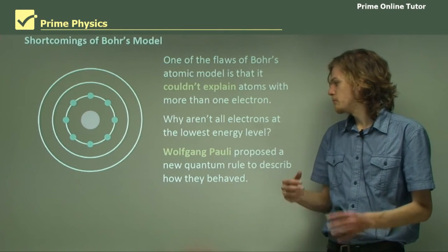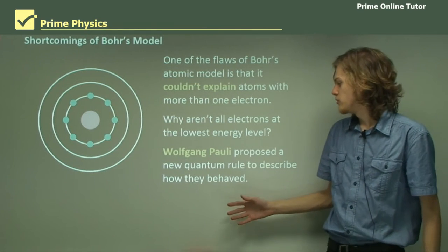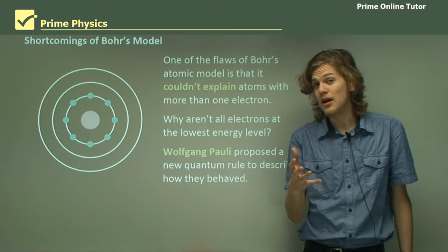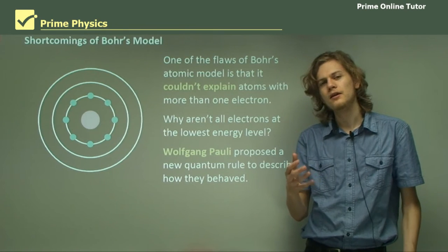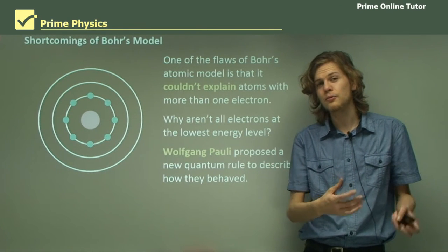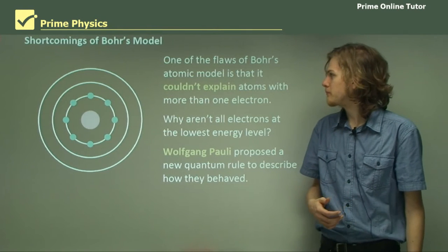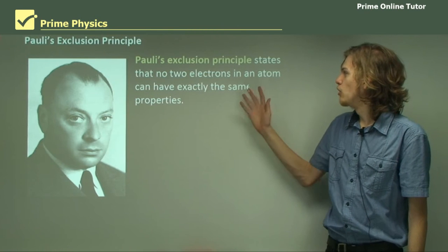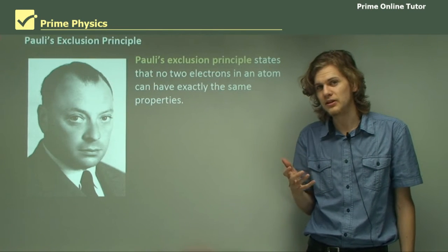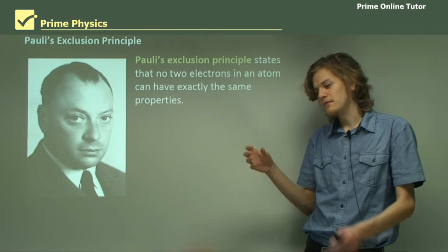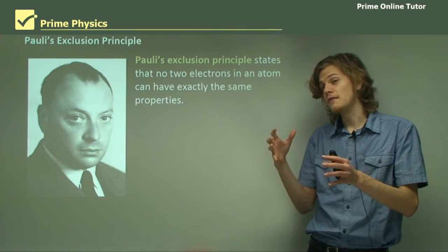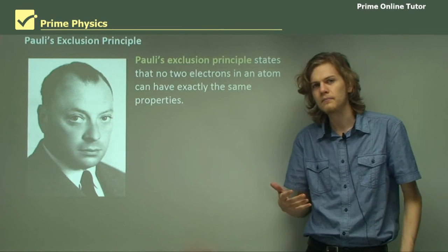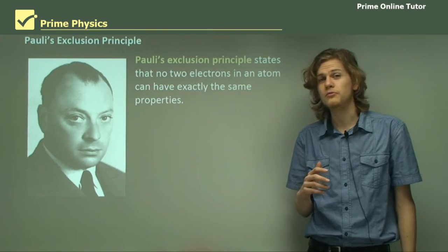Wolfgang Pauli proposed a new quantum rule to describe how they behaved. He didn't describe why they behaved like this, but his rule managed to show exactly where the electrons were in an atom. Pauli's exclusion principle means that no two electrons in an atom can have exactly the same properties. That means if you have two electrons in an atom, they either have different energy levels, or different spins, or different quantum numbers. There are a number of quantum numbers, but we don't really need to learn about them just now.